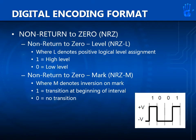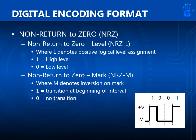For digital encoding formats — non-return to zero, or NRZ — we have three types. First, non-return to zero level, or NRZ-L, where L denotes positive logical level assignment. For binary 1, the digital data would have a high level, and for binary 0, a low level. The second type is non-return to zero mark, or NRZ-M, where M denotes inversion on mark. When the bit is 1, a transition at the beginning of an interval will occur. When the bit is 0, there will be no transition.